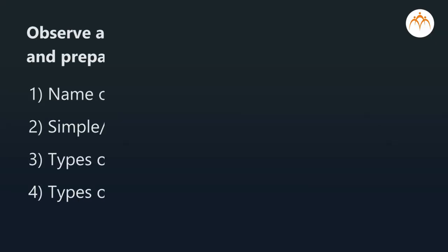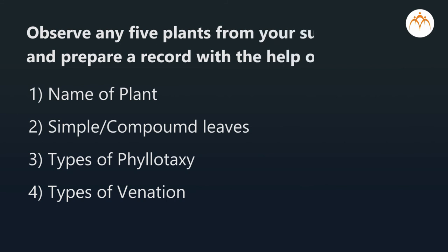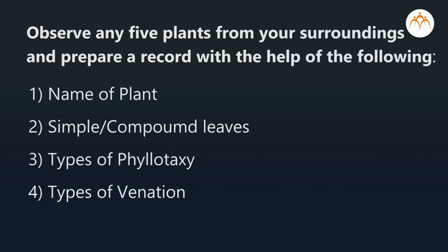To have a better understanding of the concepts studied today, I will assign a simple activity. Observe any five plants from your surroundings and prepare a record with the help of the following points: one — name of the plant; two — simple or compound leaves; three — type of phyllotaxy; four — type of venation.